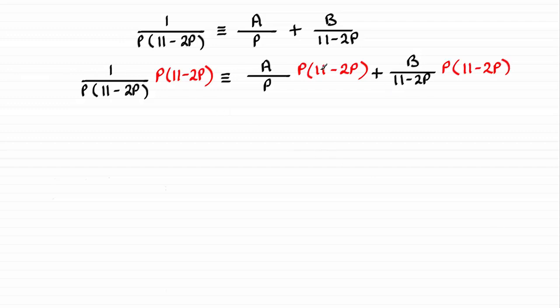We're going to be multiplying each of the terms by P times 11 minus 2P. The reason for that is that we can cancel out that P times 11 minus 2P in each of these terms.